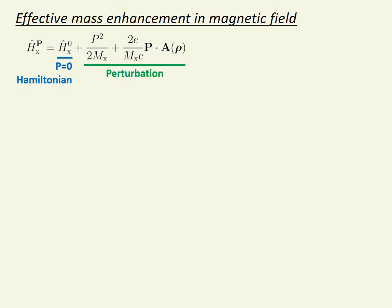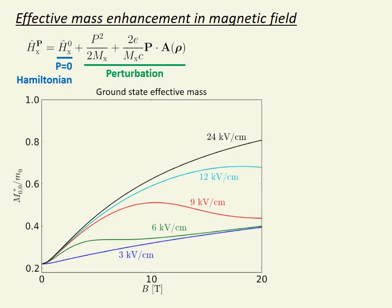We then use perturbation theory up to second order to find the correction to the exciton energy for non-zero p. The change in energy is proportional to p squared, allowing us to determine the effective mass enhancement due to the magnetic field. This is plotted here for different electric fields.